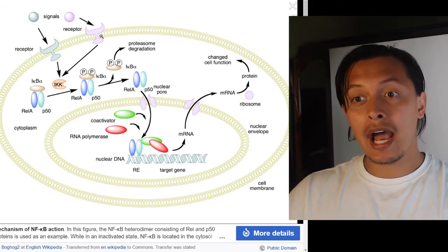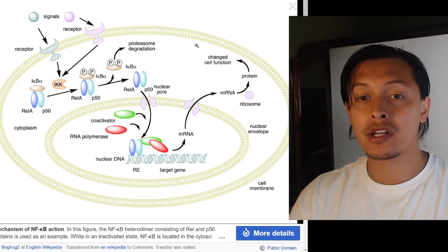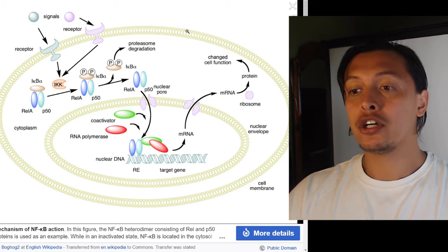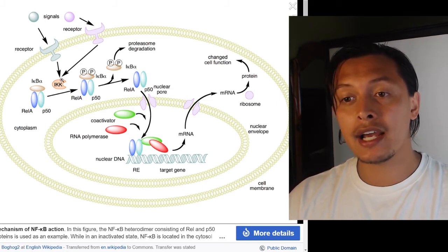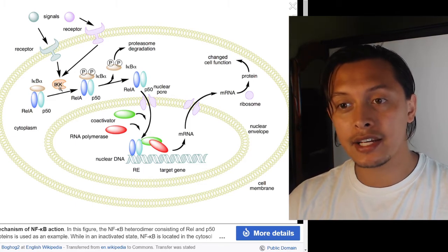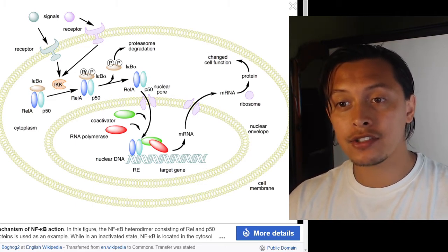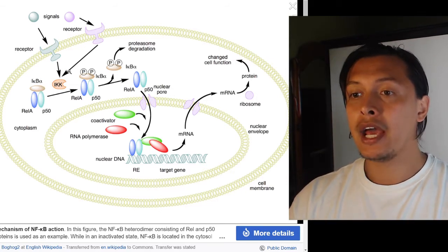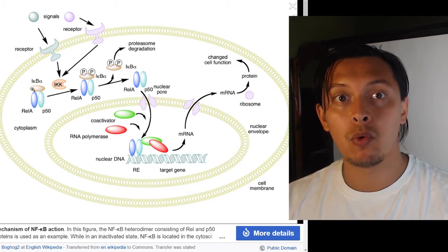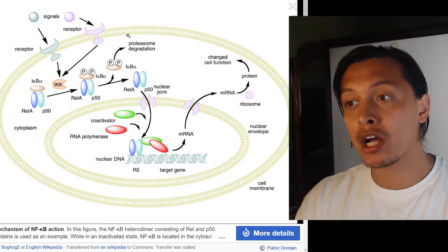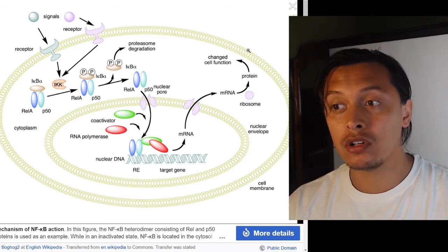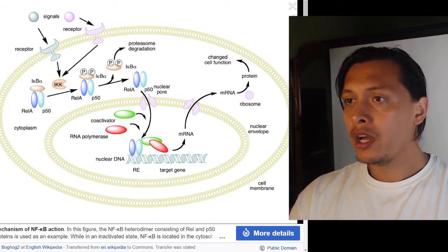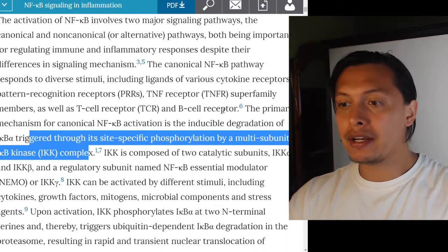A variety of receptors on different cells can all connect to this canonical pathway through IKK — the kinase that adds phosphates to the I-kappa B alpha inhibitor. This is the most described and most studied mechanism. This is how a variety of different receptors are able to hook up to the same canonical pathway.